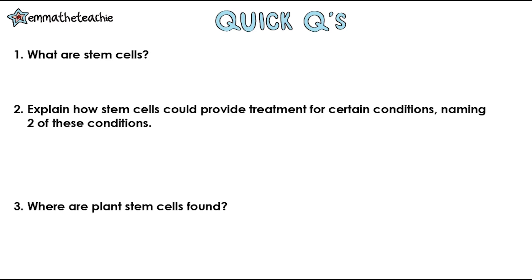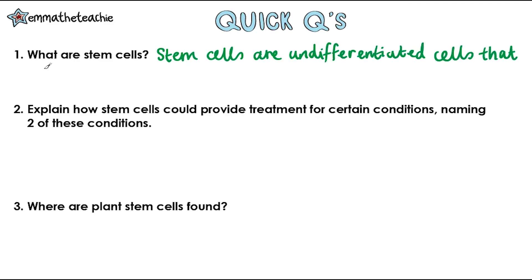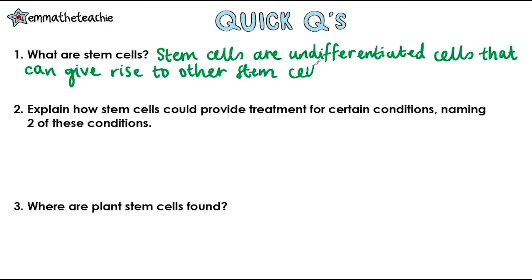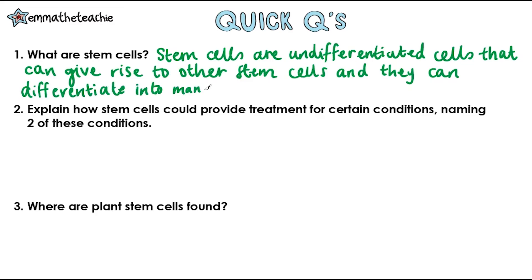Question one: what are stem cells? Stem cells are undifferentiated cells that can give rise to other stem cells, and they can differentiate into many other cell types.